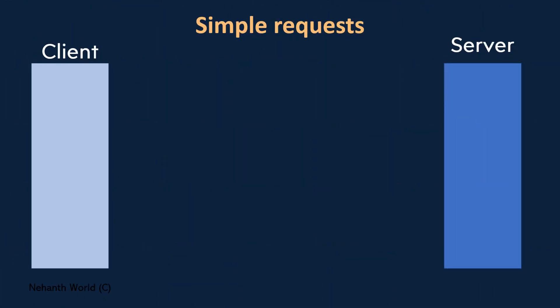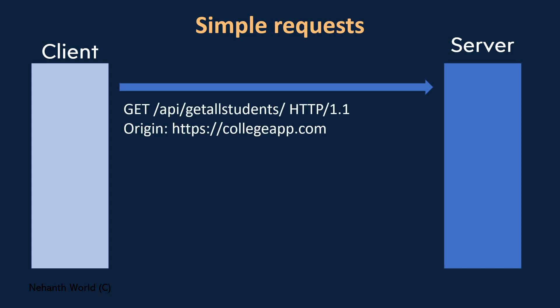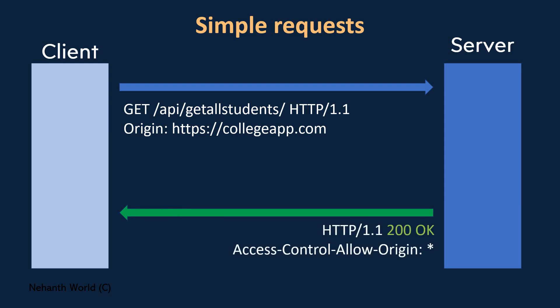Let me show you how it works. Here is a client — which can be our Angular application — and here is the server, which can be our Web API application. The client sends a GET request to the server with the origin header. The server sends back a success response with status 200, and you can see the CORS header added: Access-Control-Allow-Origin: * — that is the CORS header added in the response and sent to the client.